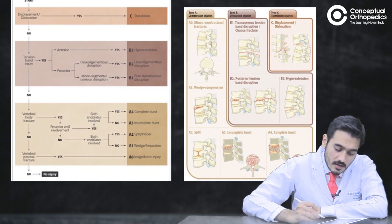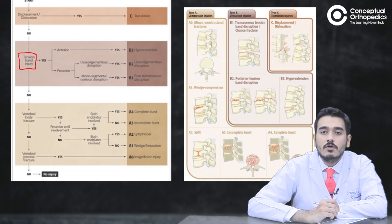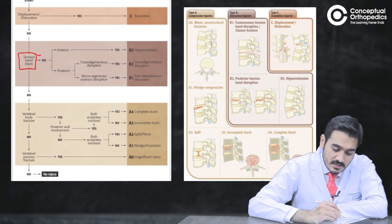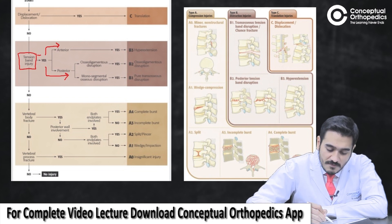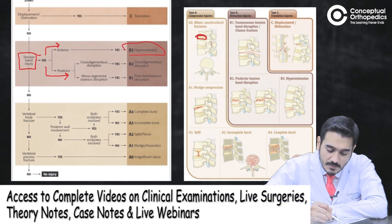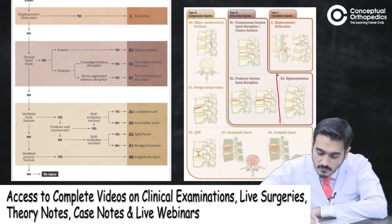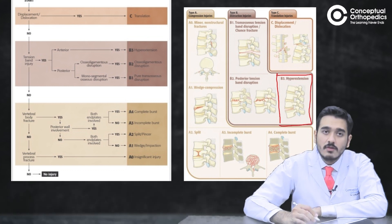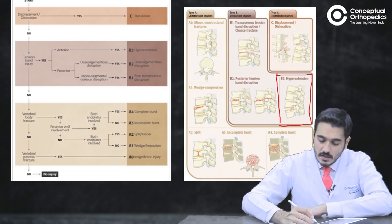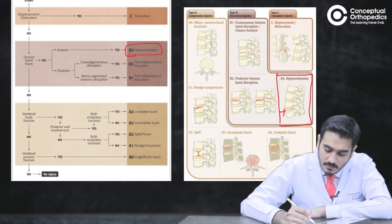If there is no dislocation, determine whether there is a tension band injury — we have already discussed this when we talked about ligamentous injury. If yes, check whether it is anterior or posterior. If the tension band injury is anterior, that is in the disc space, it is a hyperextension injury. This is Type B3 — when the spinal column goes into hyperextension, it will forcefully open the disc space.